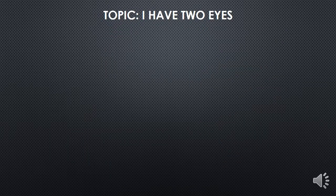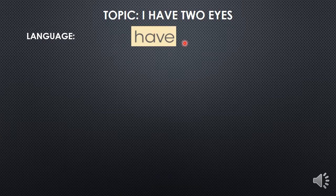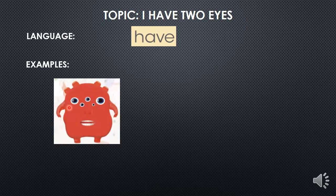We're going to start with the class. The topic for today is: I have two eyes. El propósito de la clase es repasar el verbo have aprendido en la octava unidad. Como ustedes ya saben, vamos a dar un breve repaso. Tenemos para hoy el lenguaje que vamos a utilizar: el verbo have, que significa tener. Para ello les voy a mostrar algunos ejemplos.